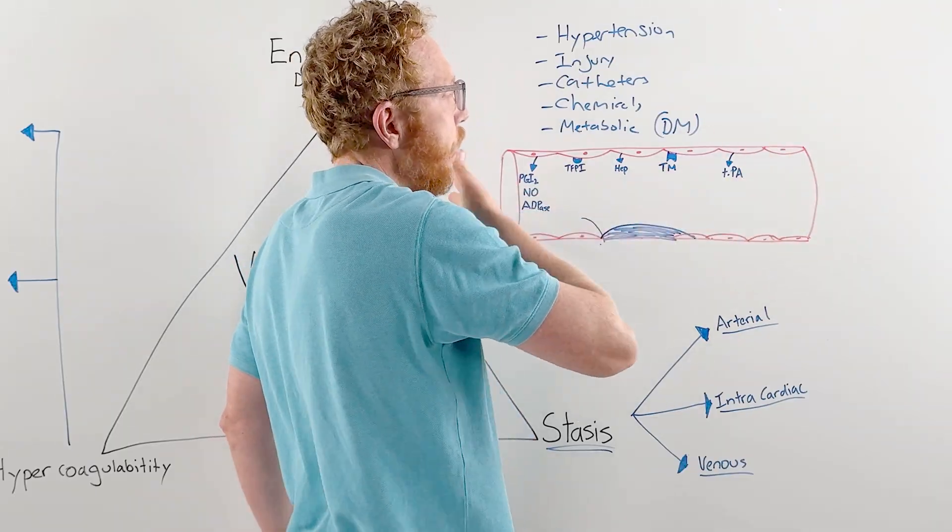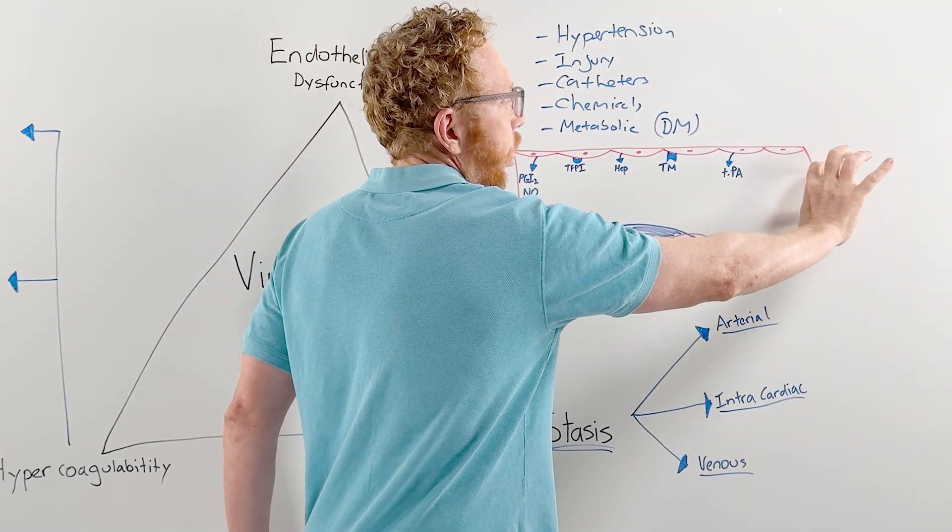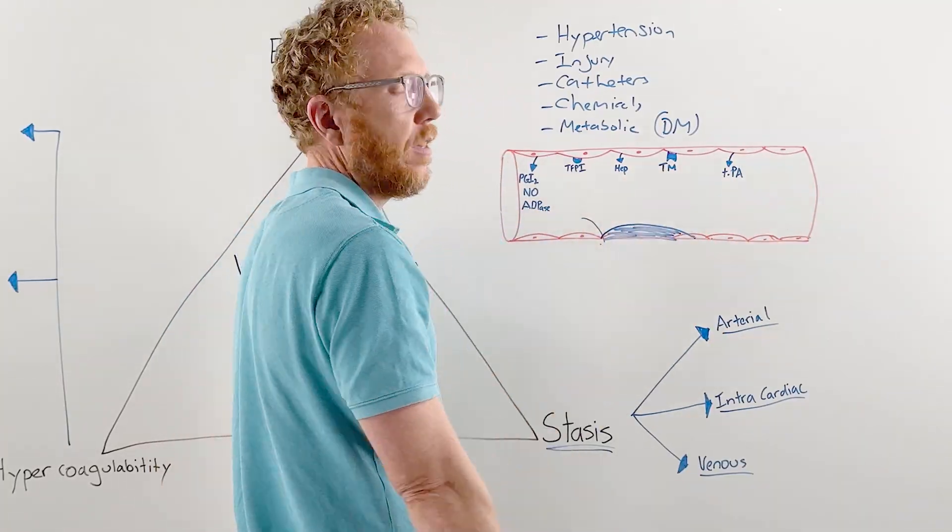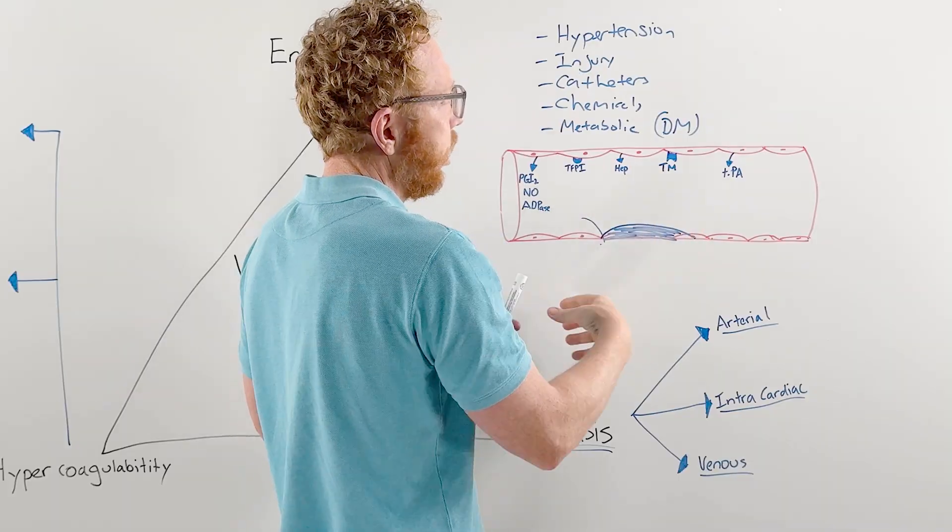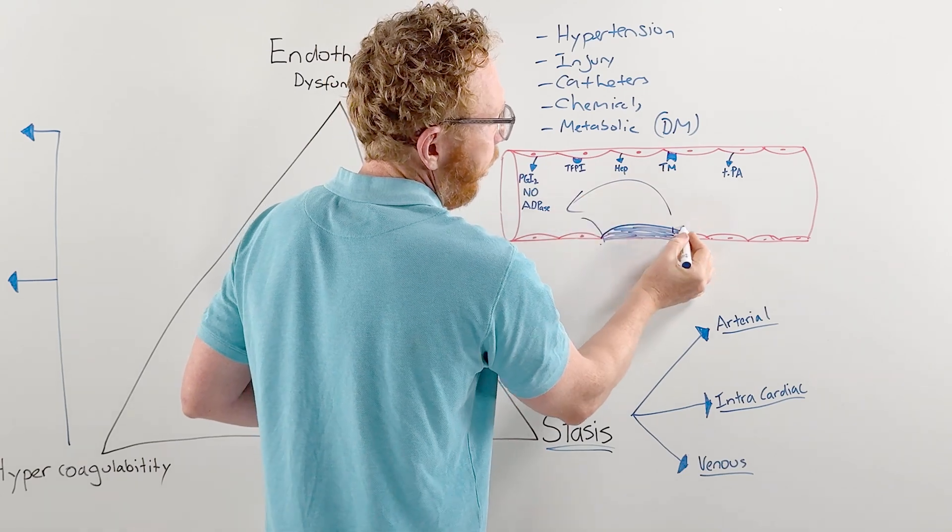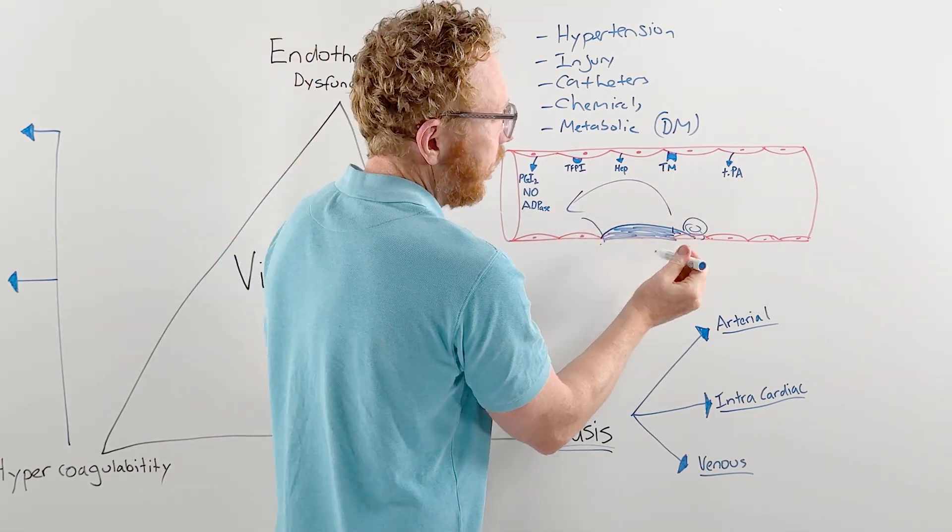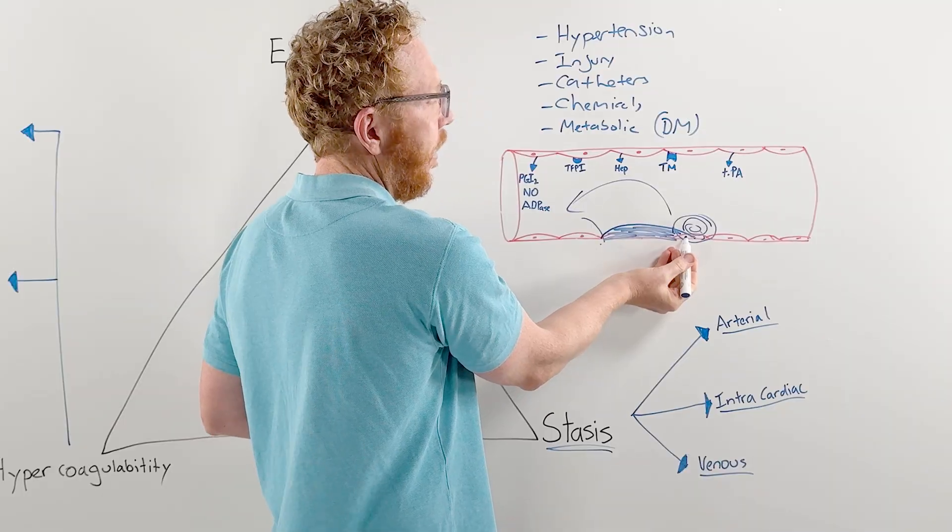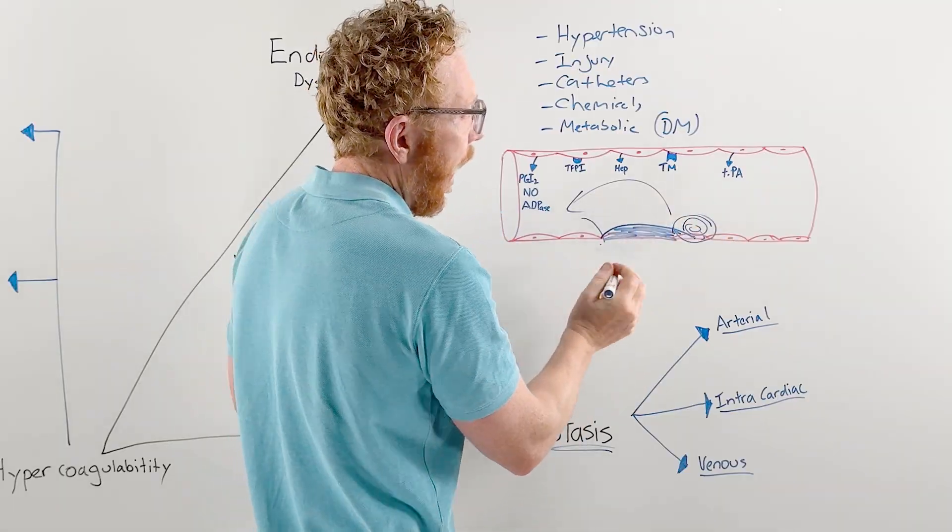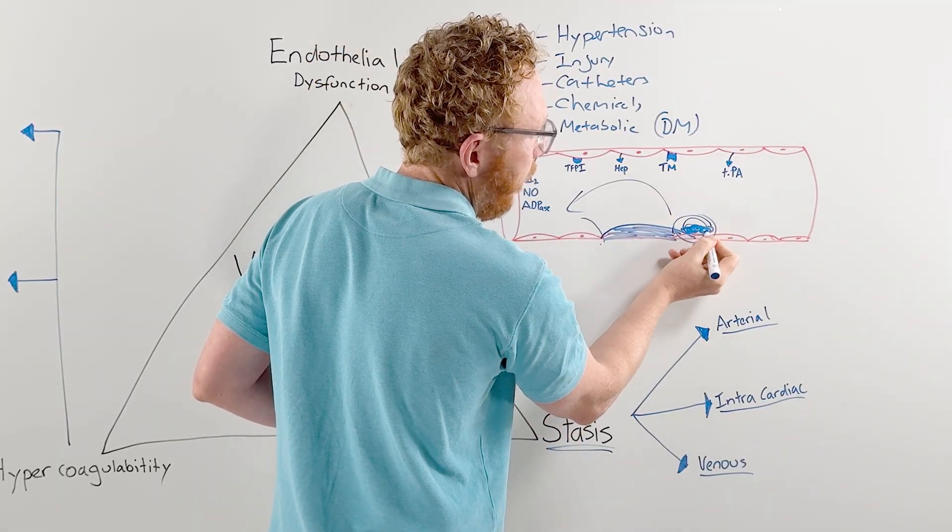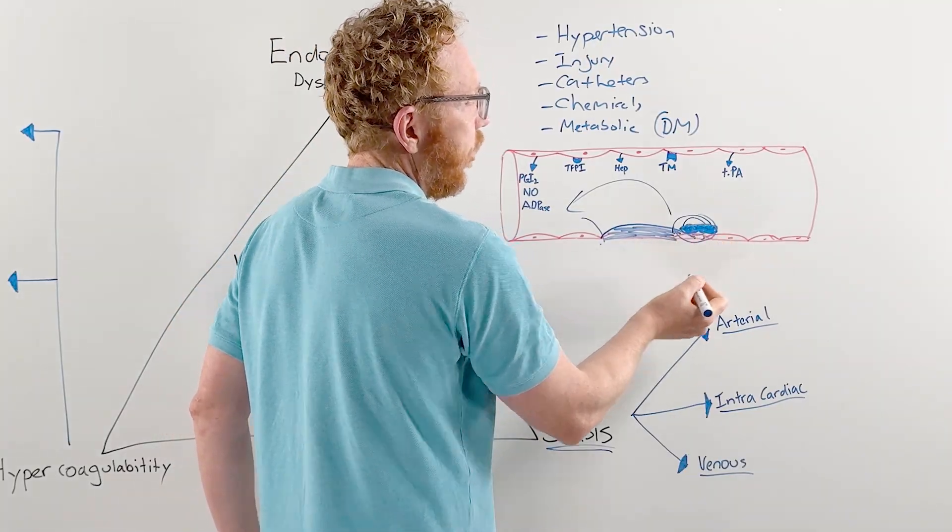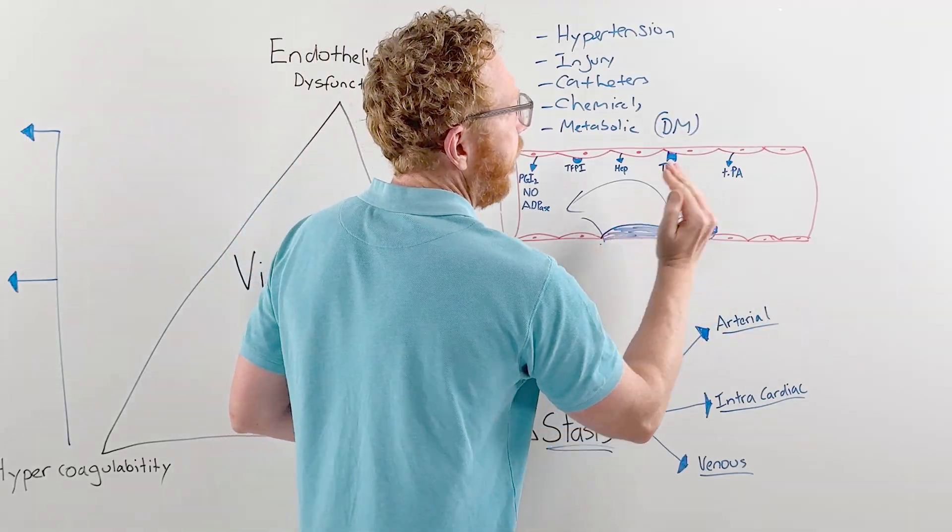This plaque changes the dynamics of blood flow. Normally we see laminar flow where cells sit in the middle and plasma on the outside. But as blood flows through, it disrupts this flow. With the arterial system, blood smashes into the plaque, goes over the top, but forms an eddy in front of the plaque. That makes the flow in front of the plaque static or slowing down.